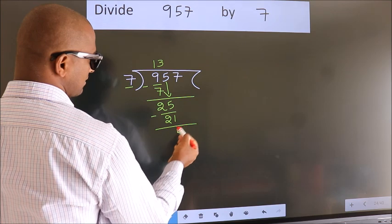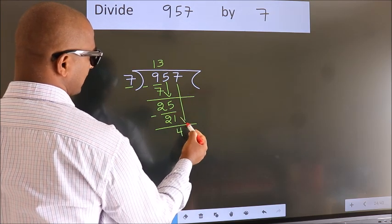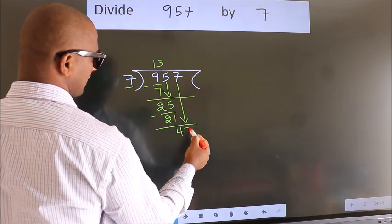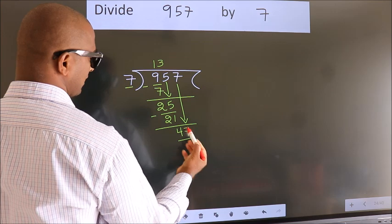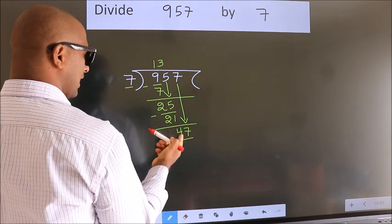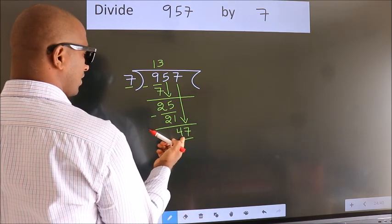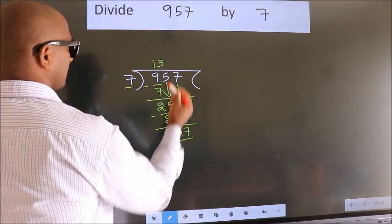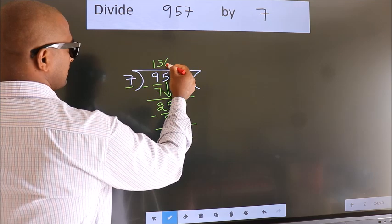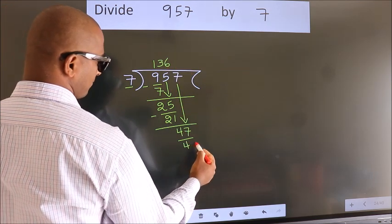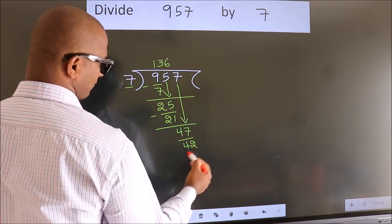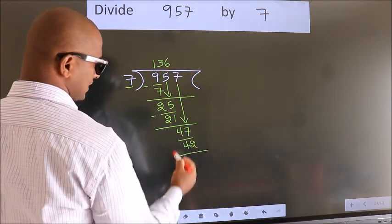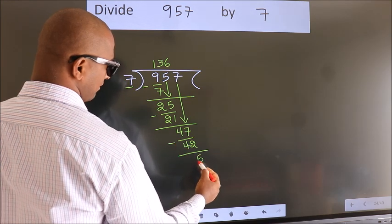After this, bring down the beside number — so 7 down, giving us 47. A number close to 47 in the 7 table is 7 sixes, 42. Now we subtract. We get 5.